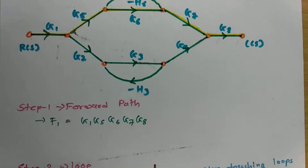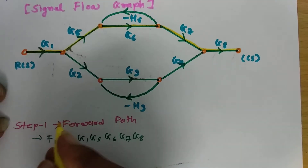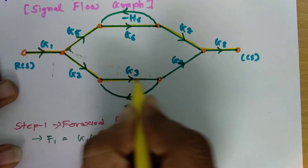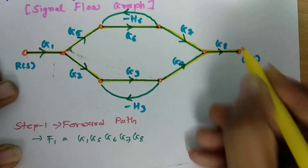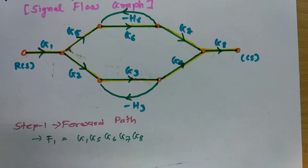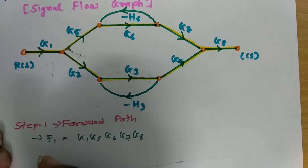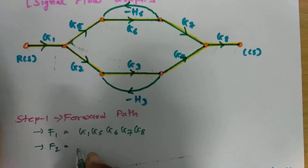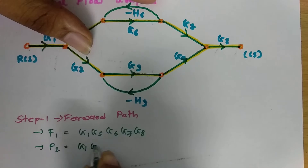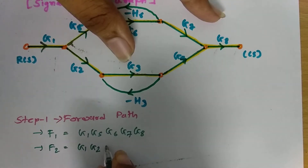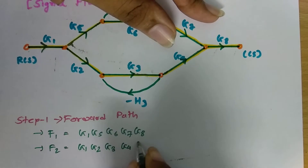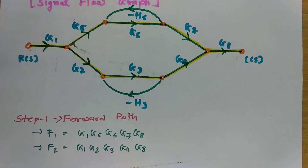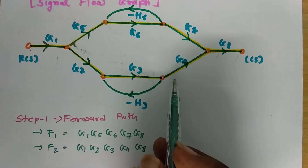The second forward path in this signal flow graph goes from G1 to G2 to G3 to G4 to G8. So the second forward path F2 equals G1 · G2 · G3 · G4 · G8. There are two forward paths in this signal flow graph and no additional ones.